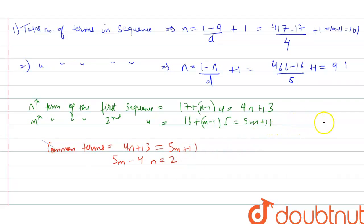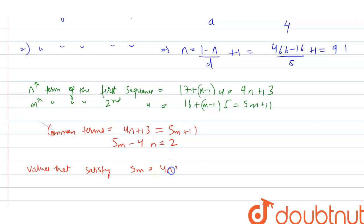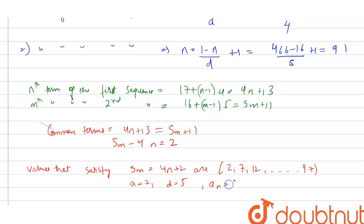After solving, 5m - 4n = 2. The possible integral values of m that satisfy this are 2, 7, 12... till 97, where a = 2, d = 5, and the last term is 97.